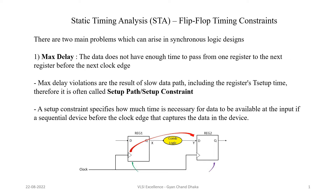What is the max delay problem? It occurs when the data does not have enough time to pass from one register to the next register in one clock cycle. When the data is launched by register 1, the time it takes to propagate from the D input of register 1 to the D input of register 2 is more than one clock cycle. Whenever the delay between launch flop and capture flop is more than one clock cycle, this is called the max delay problem.